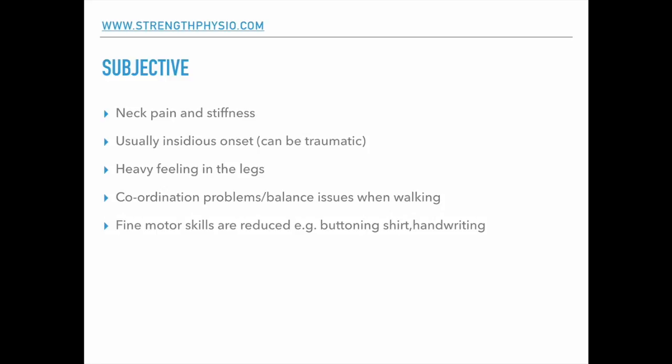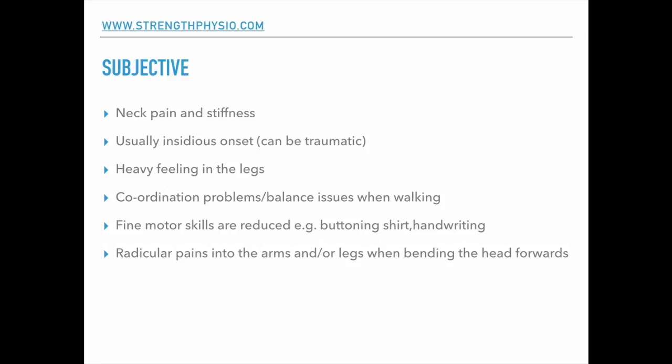Fine motor skills are also reduced in the hands, so things like buttoning a shirt or handwriting - these are things to ask about if you've got someone with neck pain that you think could have a cervical myelopathy. They can have radicular pains into the arms or into the legs when bending the head forwards. Arm pain can often be bilateral because if you've got a stenotic pressure on the spinal cord centrally, that's going to cause issues in both arms.